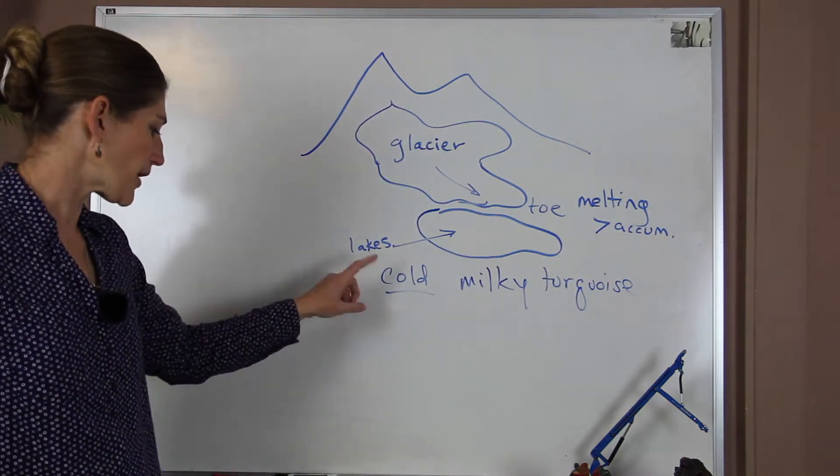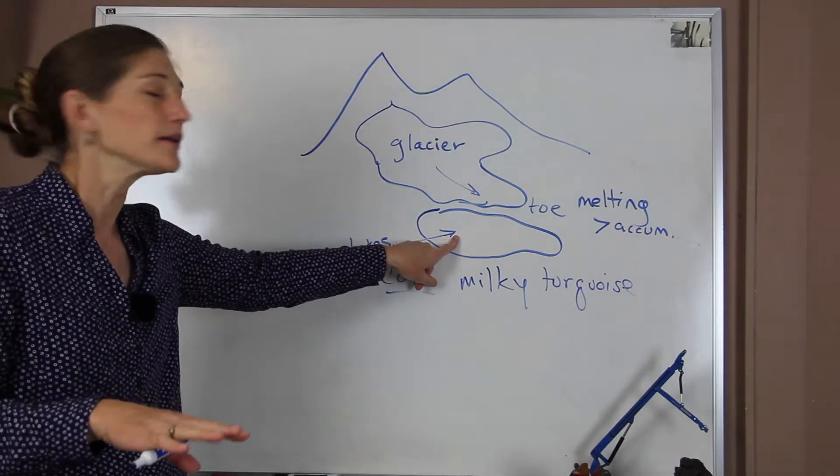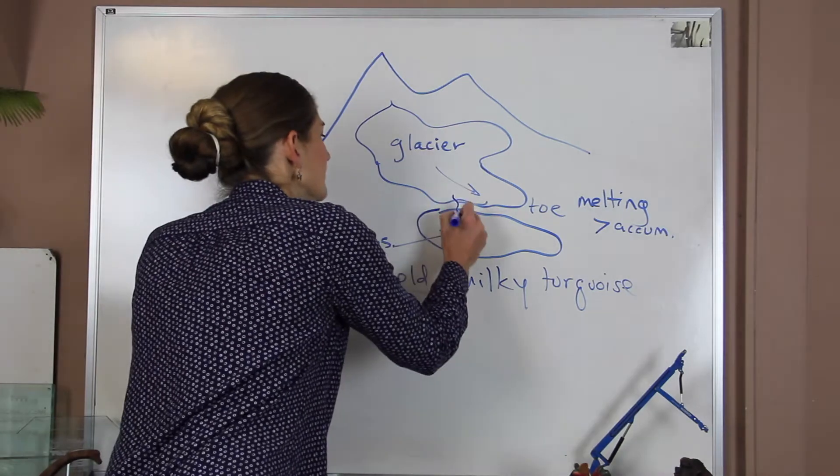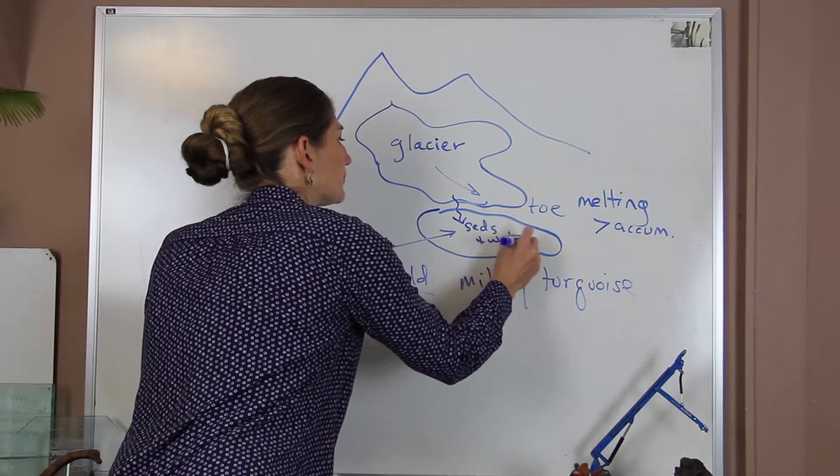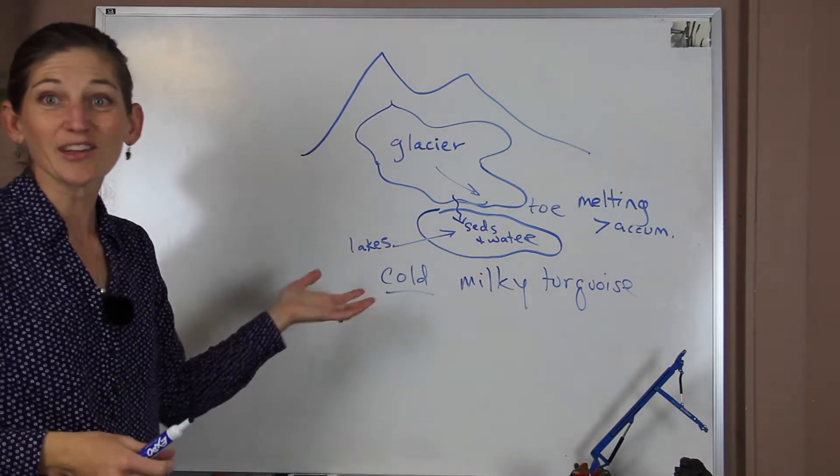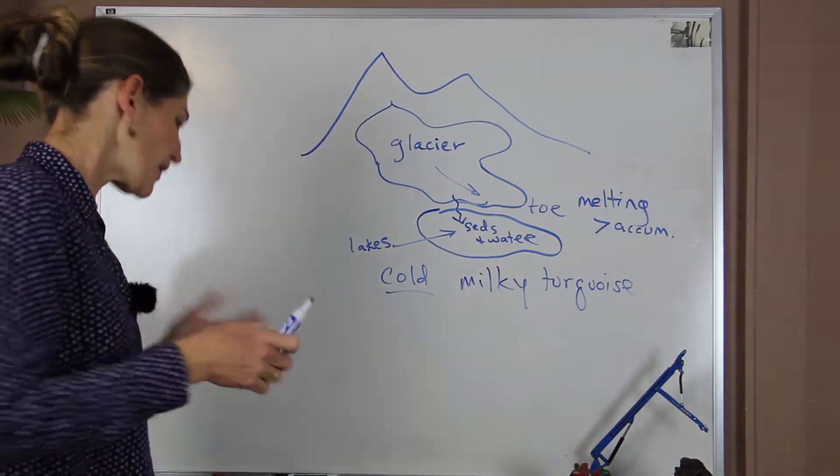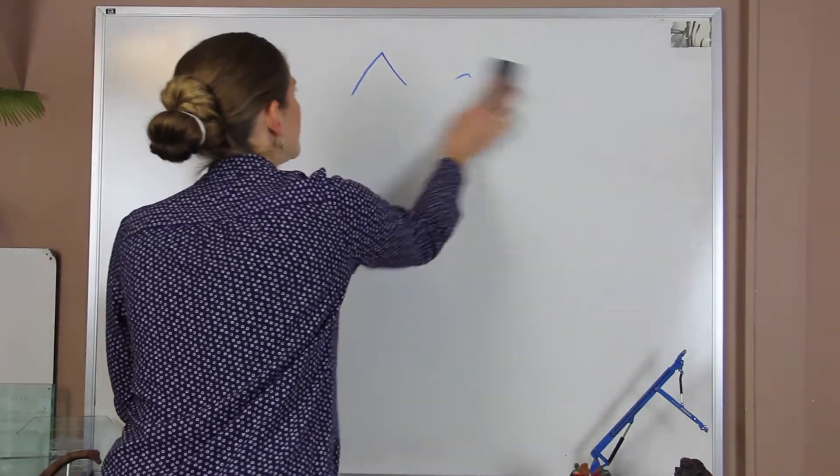So this color comes from, one, the water being there, which would be a nice blue color. But the addition of those sediments gives it that color. Now, what is the study important? Well, the glaciers are melting, and the water is changing. So the first question that I wanted to talk about today is, what makes water look the way it does?